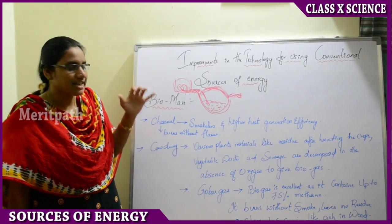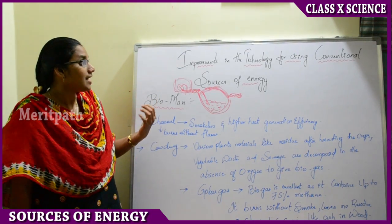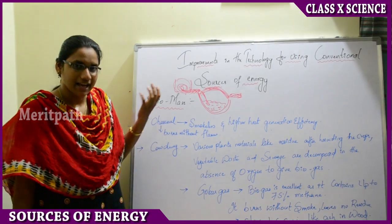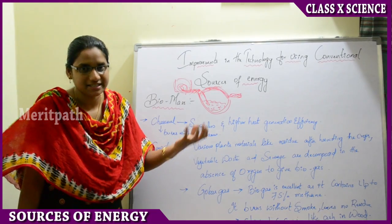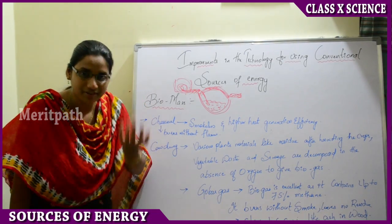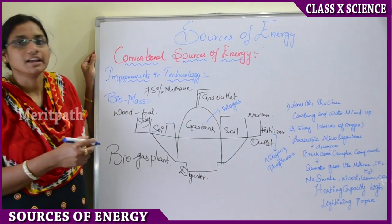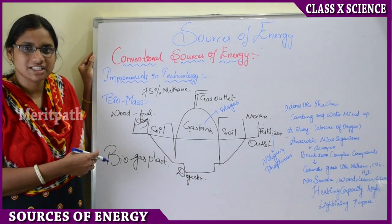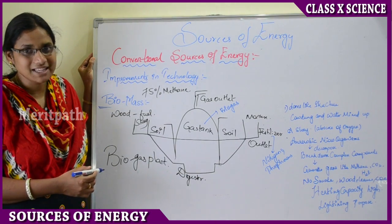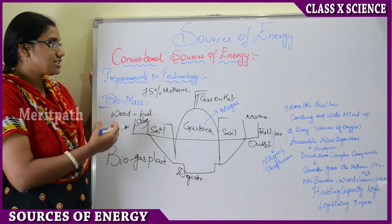This biomass, generated by decomposition of sewage materials, is used for household and cooking purposes and also for generating gas useful for many other applications. These are improvement technologies used to convert bio materials — that is, conventional sources of energy — into useful gas. We are converting waste material into useful energy for people. These are major improvements in the technology of conventional sources of energy.